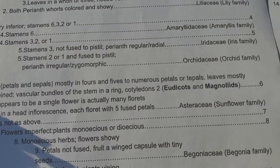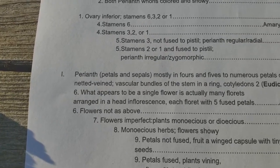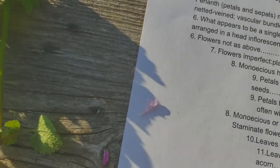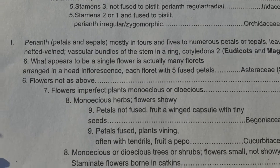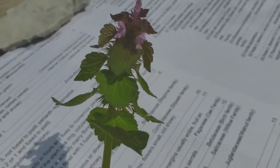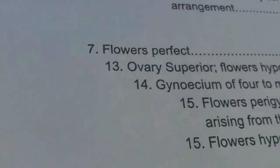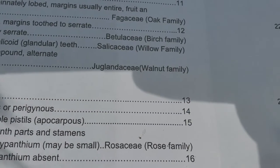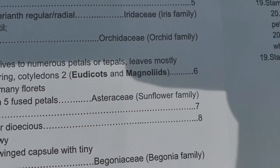So we say eudicots and magnoliids, and we go to step six. 'What appears to be a single flower is actually many florets' — we saw individual stamens, so it's definitely not that. It's not the aster family. Moving on: 'Flower is imperfect, plants monoecious or dioecious' — we need to determine whether this flower is perfect or imperfect. Number seven: flowers perfect, go to 13; or flowers imperfect, plants monoecious or dioecious, go to eight.